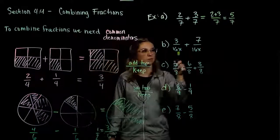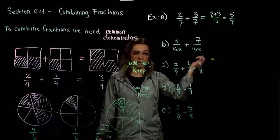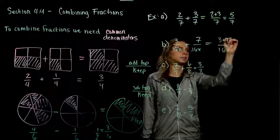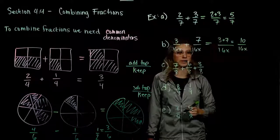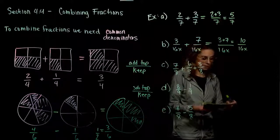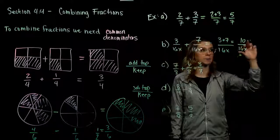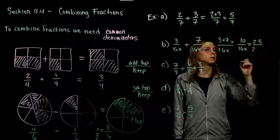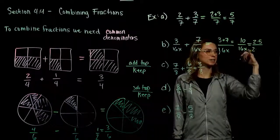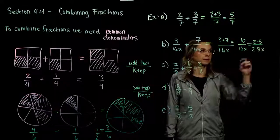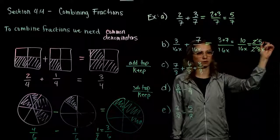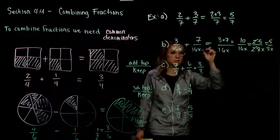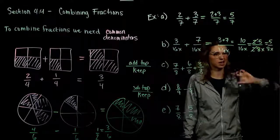In example B, we've got variables down below, and that's fine as long as they match. Keep the same denominator, add across the top. We're going to have 10 over 16x, which we can reduce because 10 and 16 are both even — we can take out a 2. So 10 breaks into 2 and 5, and 16 breaks into 2 and 8. We reduce by a factor of 2 and we're left with 5 over 8x. Top and bottom don't share anything in common, so we can't simplify any farther.